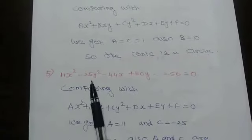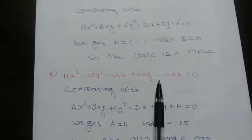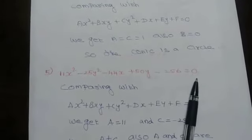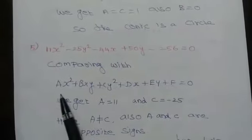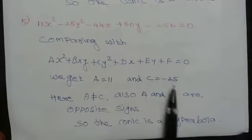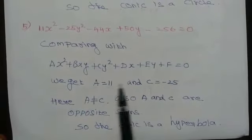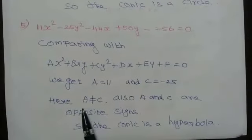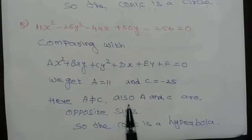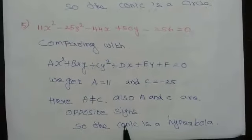Fifth question: 11x² minus 25y² minus 44x plus 50y minus 256 is equal to 0. Comparing to the general conic equation, a is equal to 11 and c is equal to minus 25. Since a and c are of opposite sign and a is not equal to c, the conic is a hyperbola.